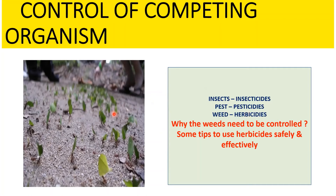Why do weeds need to be controlled? First, they decrease the yield of the crop. Second, weeds compete with crops for nutrients, light and water. Third, they decrease the fertility of the soil. Fourth, they might be poisonous to livestock or humans. Fifth, they make cultivation difficult by tangling up tools and clogging machines. Sixth, they can block the drainage system with excessive growth. Seventh, they can be a source of pests and insects that attack the crop.